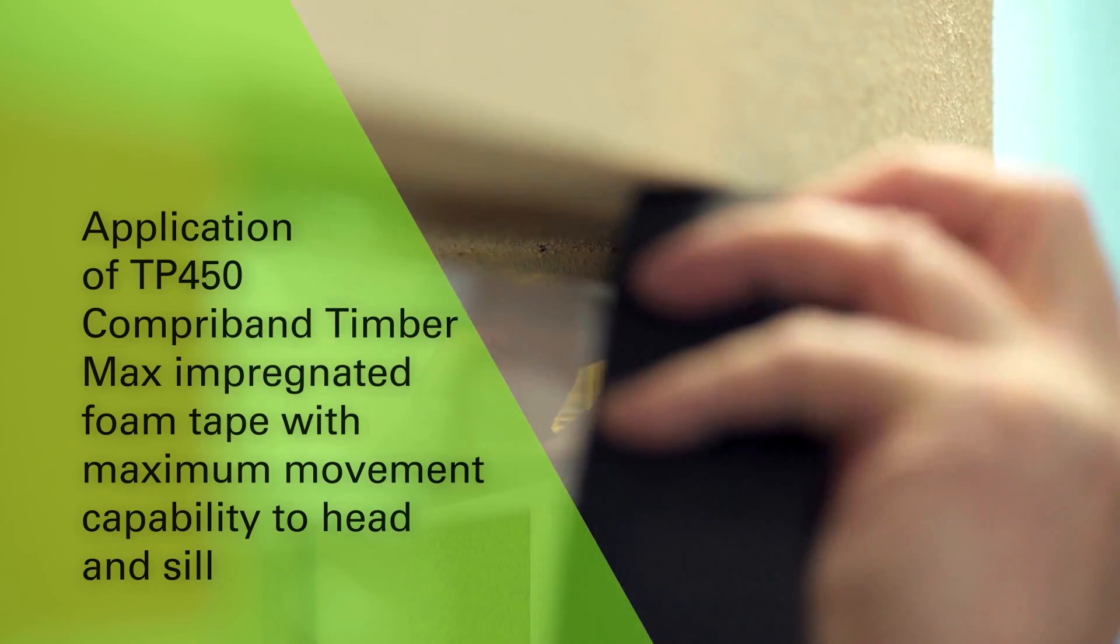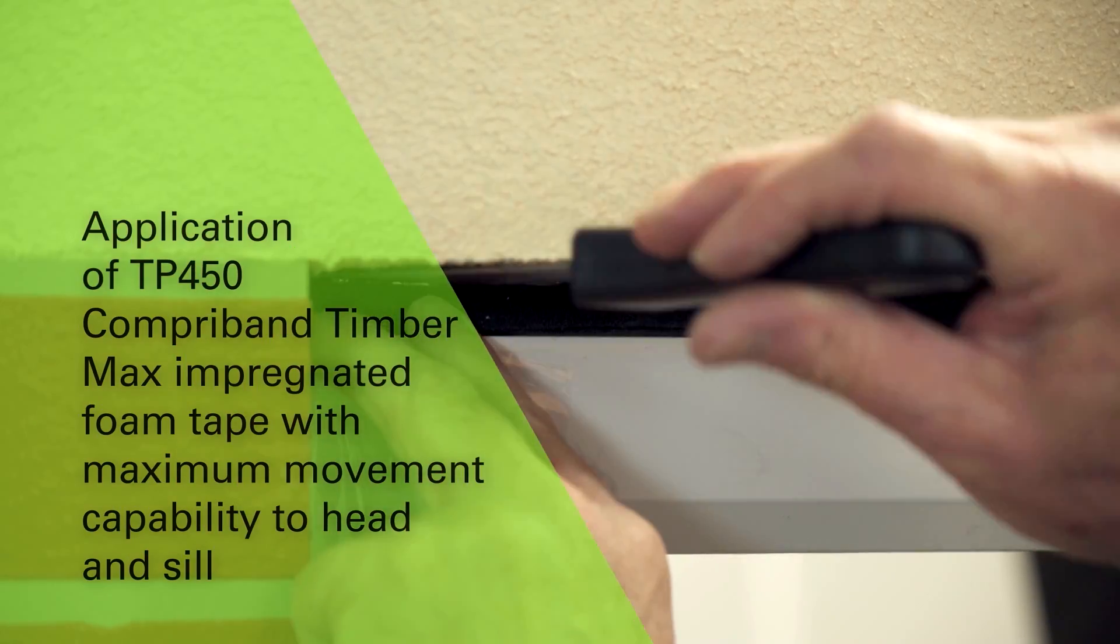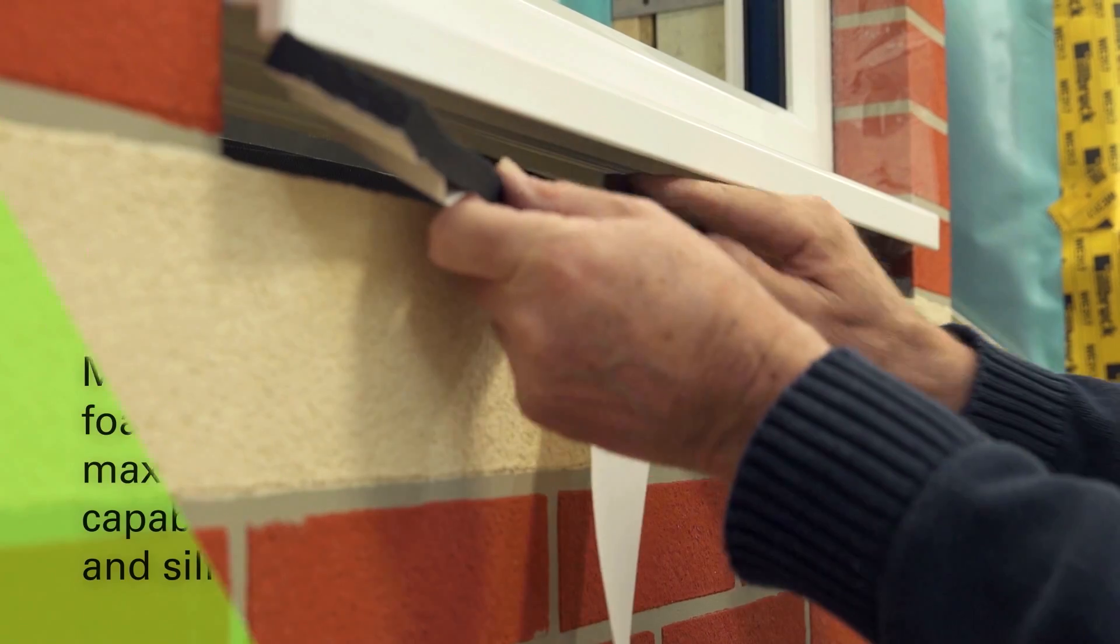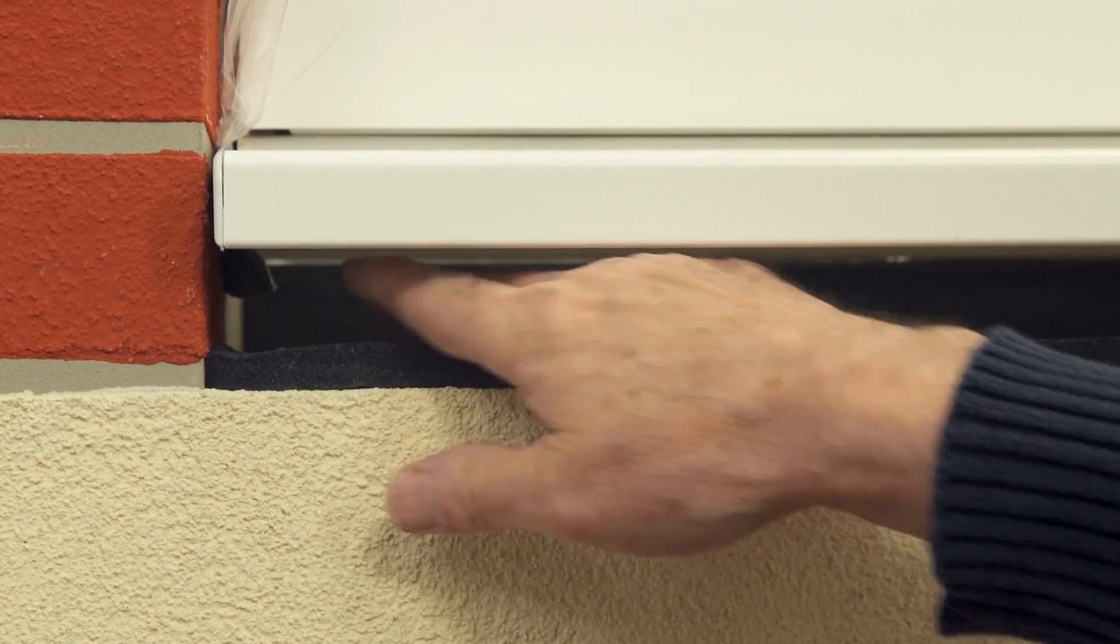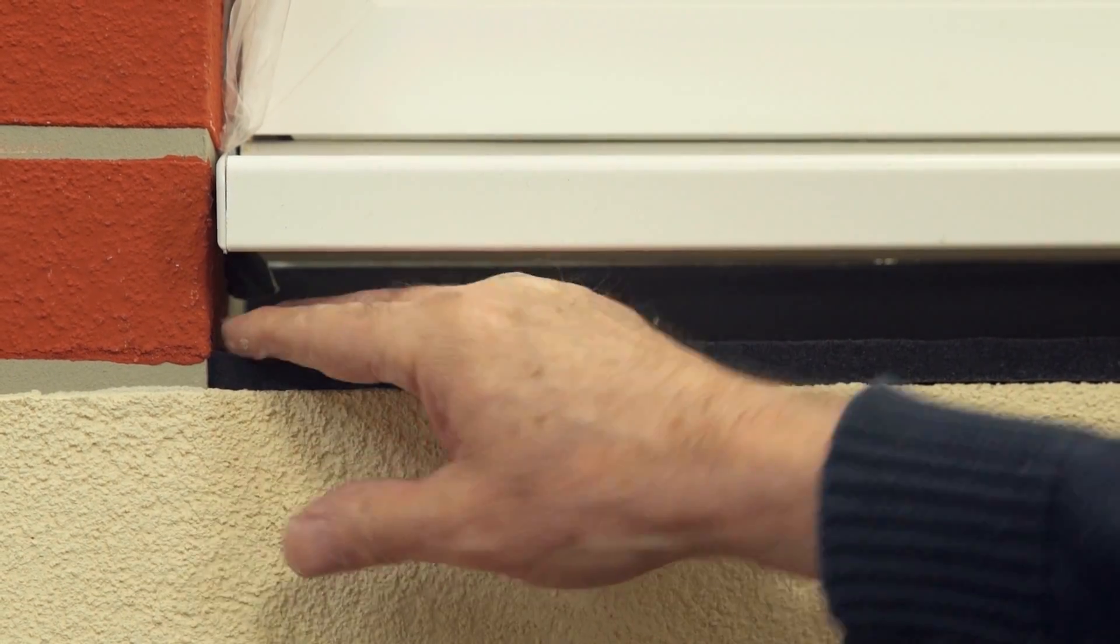Comproband TimberMax TP450 is inserted into the gap at the head and sill. TP450 has a maximum movement capability of up to 37 millimetres, sufficient to cope with a gap varying from 13 to 50 millimetres.